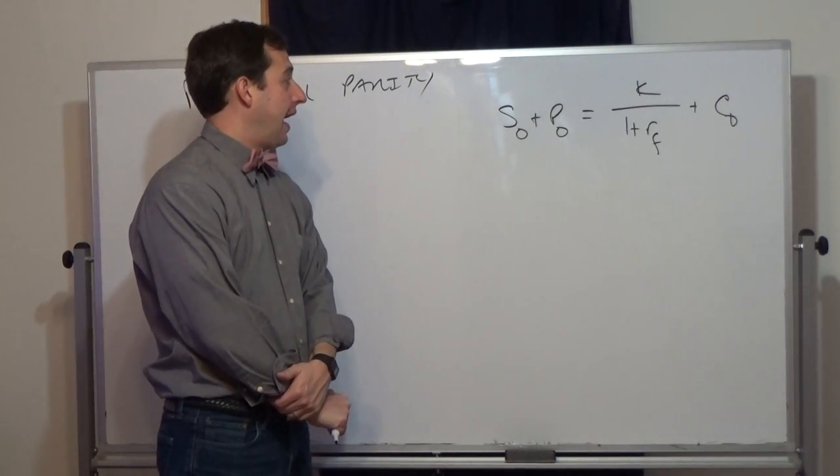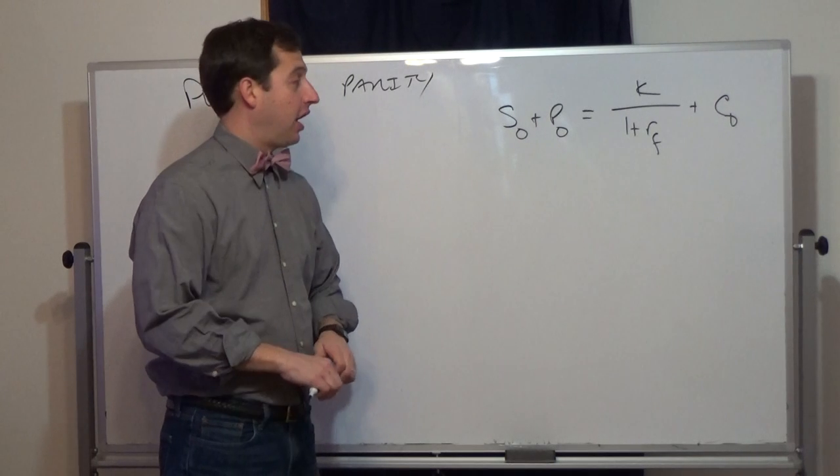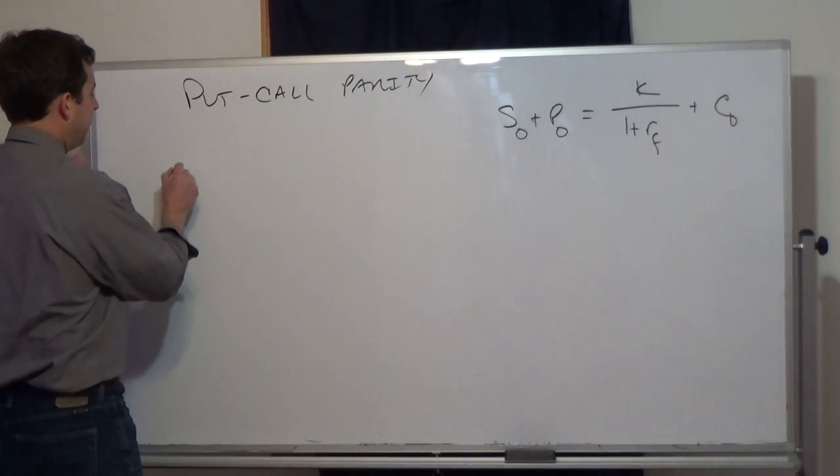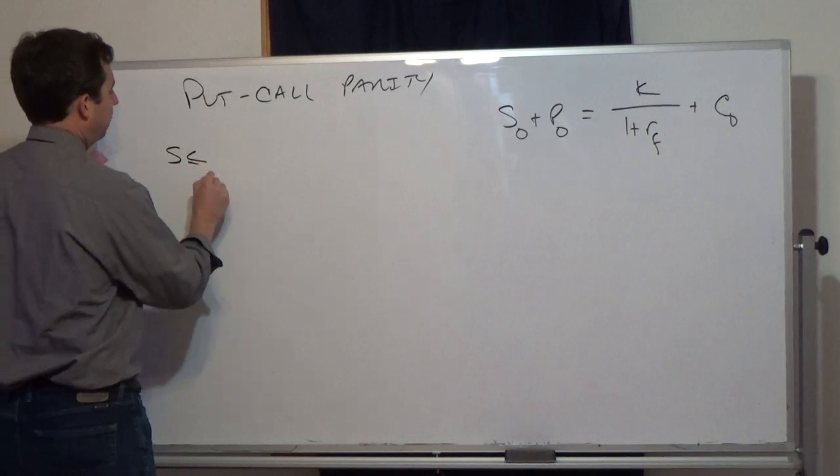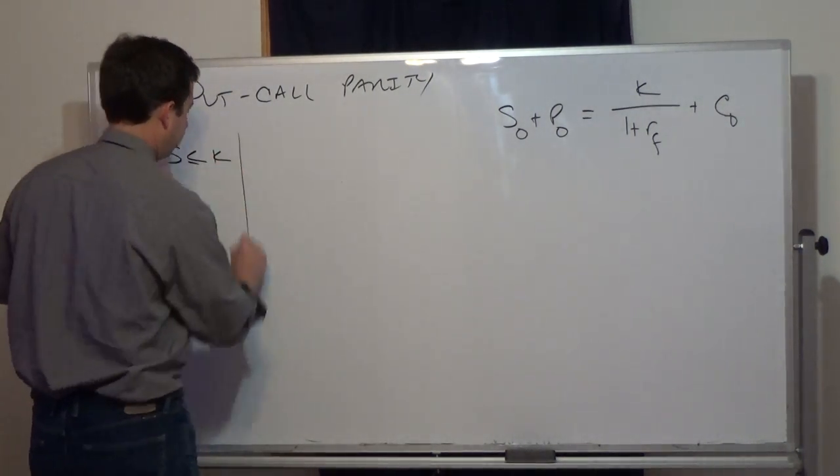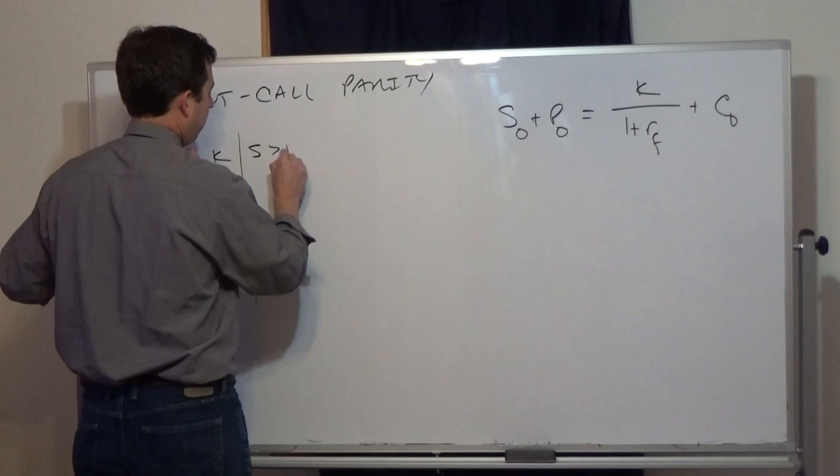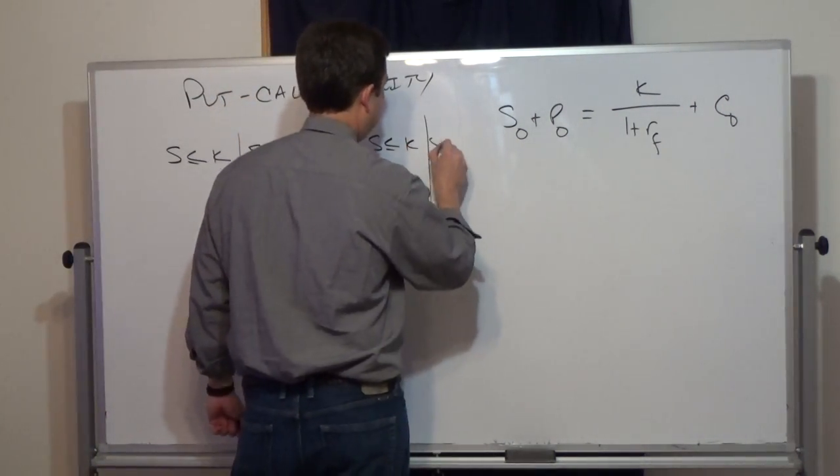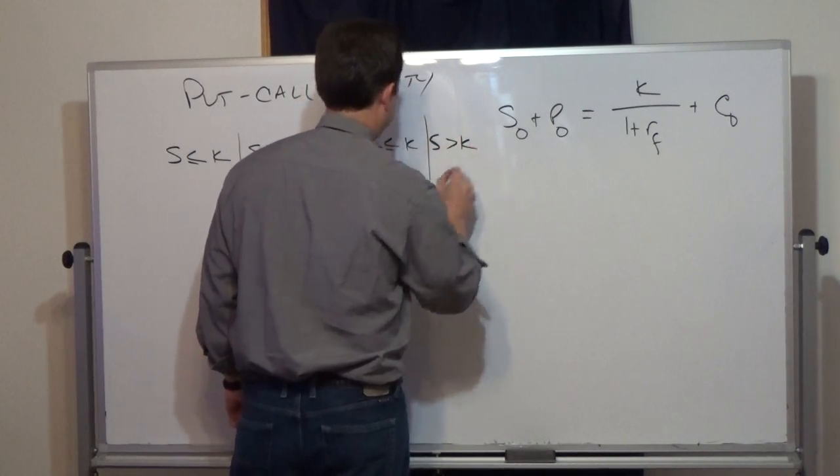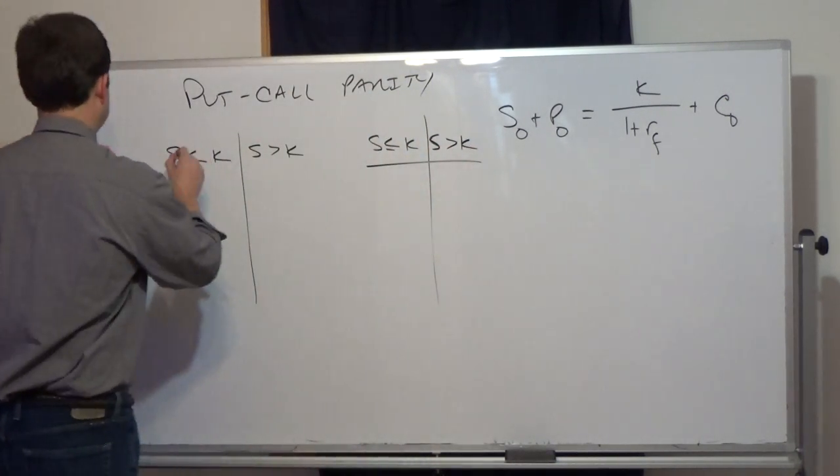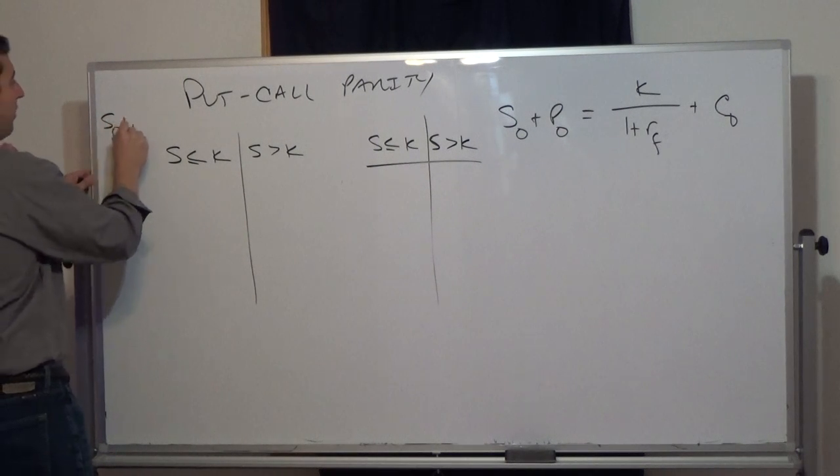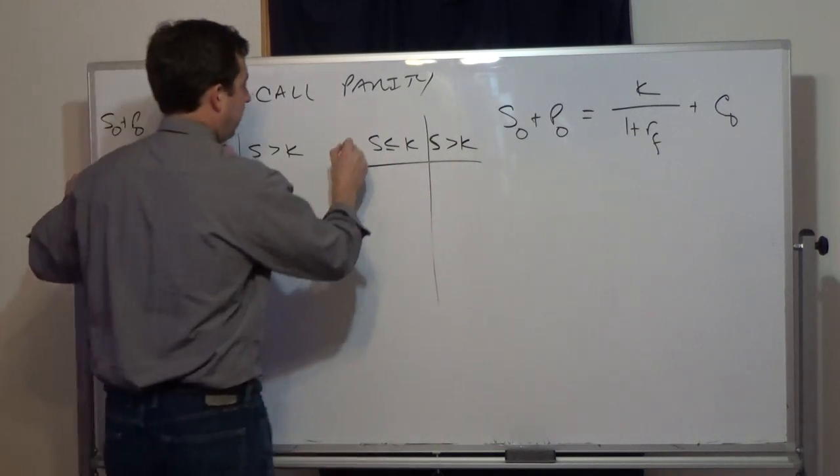Can we prove this? Certainly. A way to prove this very easily is to look at what happens if the stock price is less than the strike price and the stock price is greater than the strike. Over here, the stock price is less than the strike. What we're doing here is looking at the payoff from a protective put position.